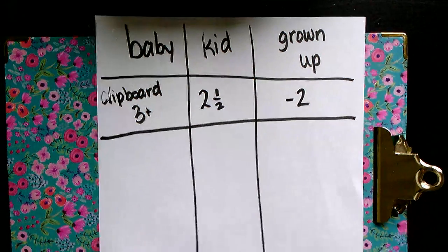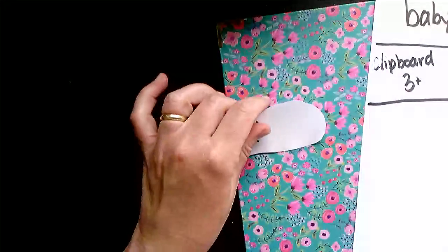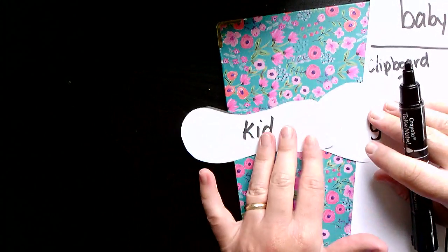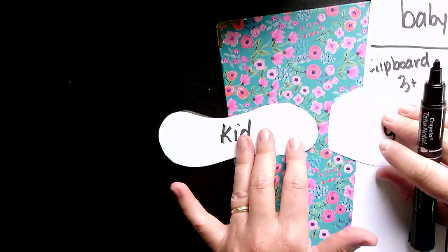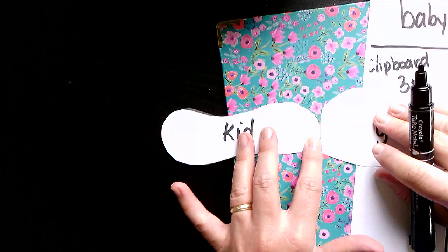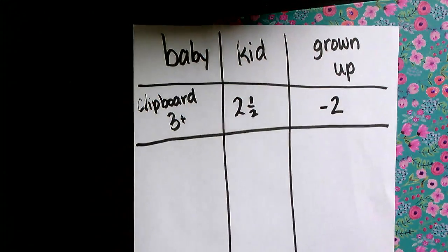Remember when you're measuring, you don't want to leave a gap. This would be called a gap, and you don't want an overlap. You want them to touch just like that. And then take a picture of your chart and show me some of the things that you measured today.